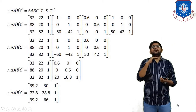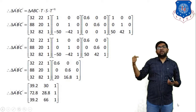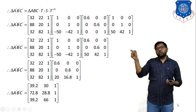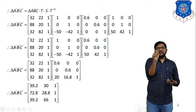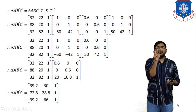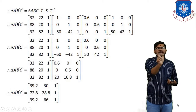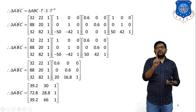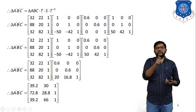Now we perform matrix multiplication. In matrix multiplication, we follow the backward direction — multiply the last two matrices first, then write the first matrices as they are. So triangle A′B′C′ equals: [coordinate matrix] × [T matrix: 1 0 0 / 0 1 0 / −50 −42 1] × [S matrix] × [T-inverse matrix]. Write the first matrix (triangle ABC coordinates) and second matrix (T) as they are, and multiply the last two.